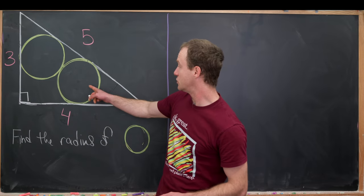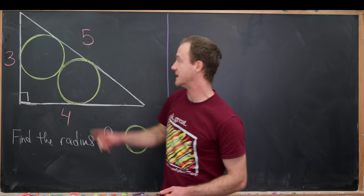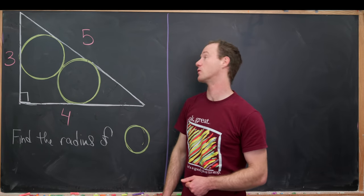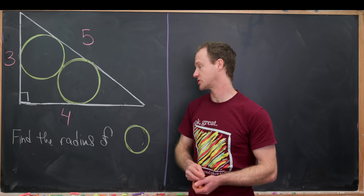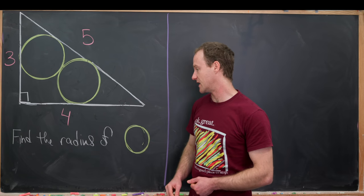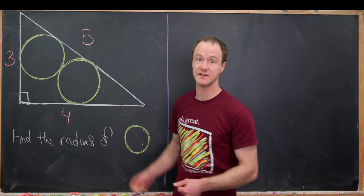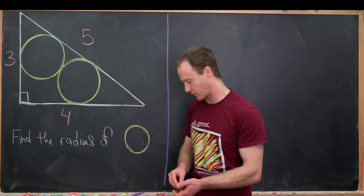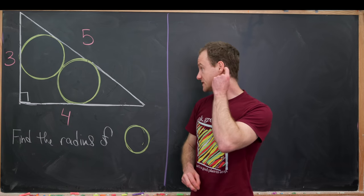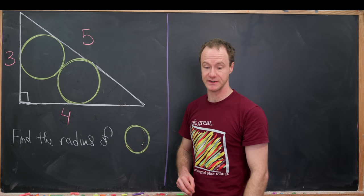And then we've got two circles of equal radius that are inscribed within the right triangle as such. And our goal is to find the radius of one of these circles, and thus find the radius of both circles. So let's maybe jump into it and see what we can do.